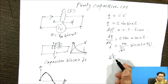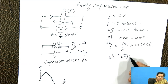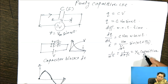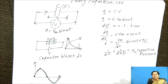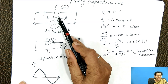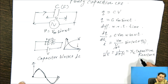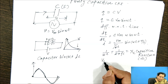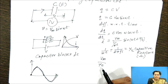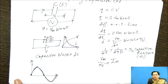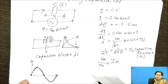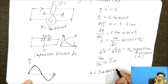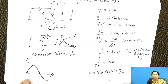Here 1/(omega C), which equals 1/(2 pi f C), is called Xc — the capacitive reactance. Capacitive reactance is the opposition of the capacitor to change in voltage, measured in ohms. Vm divided by Xc gives the maximum current Im. Replacing that term, we get the current equation: I equal to Im sin(omega t + pi/2).